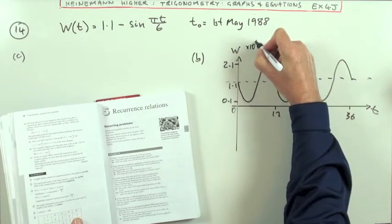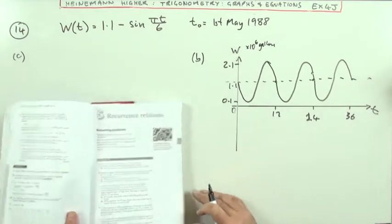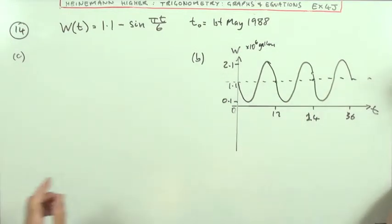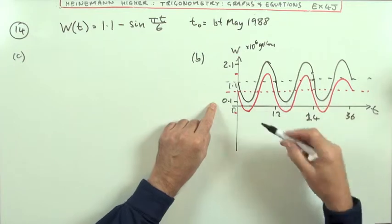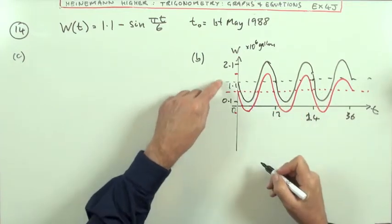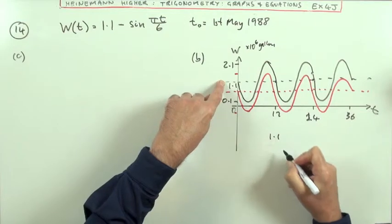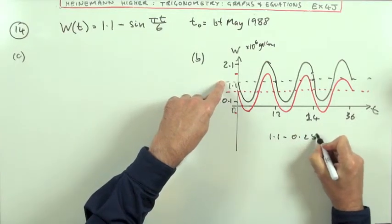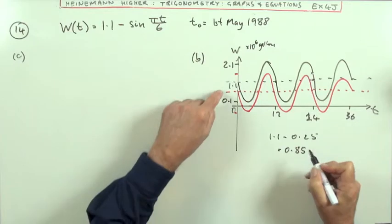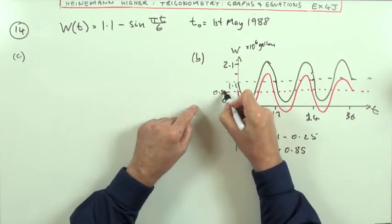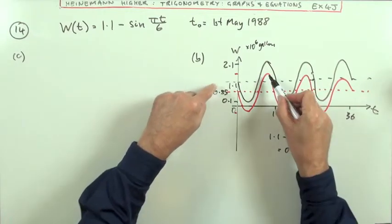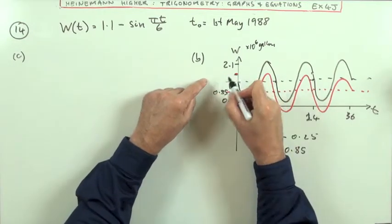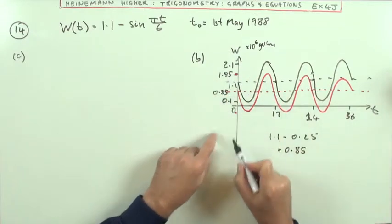Well, that just means that pattern's going to drop down by 0.25, since that scale is in millions of gallons. The scale is times 10 to the power 6 gallons. Well, that means from that point onwards, the picture will look like this, the red part, not drawn very well, which has been shifted down by a quarter, by 0.25. So instead of oscillating about 1.1, you take away 0.25, so the new mean level is 0.85.